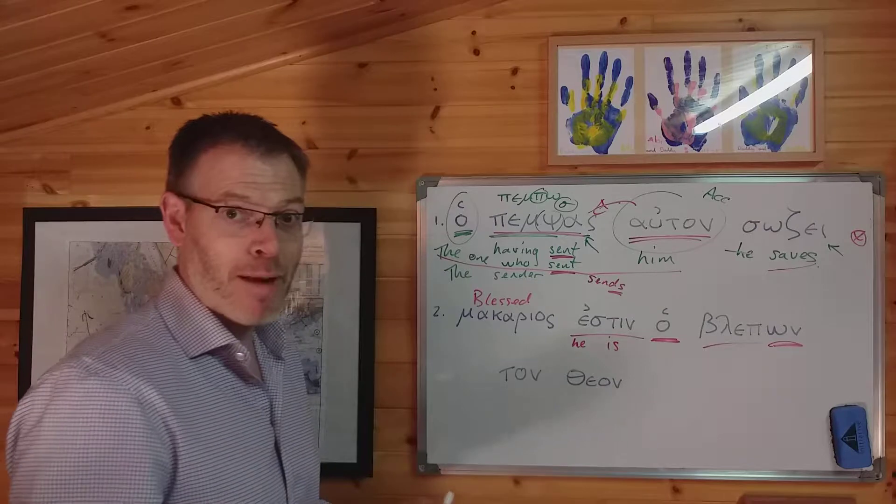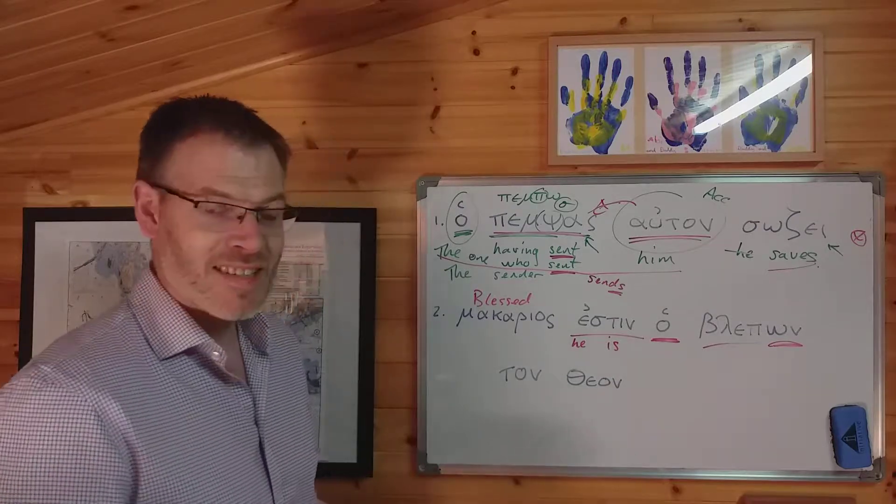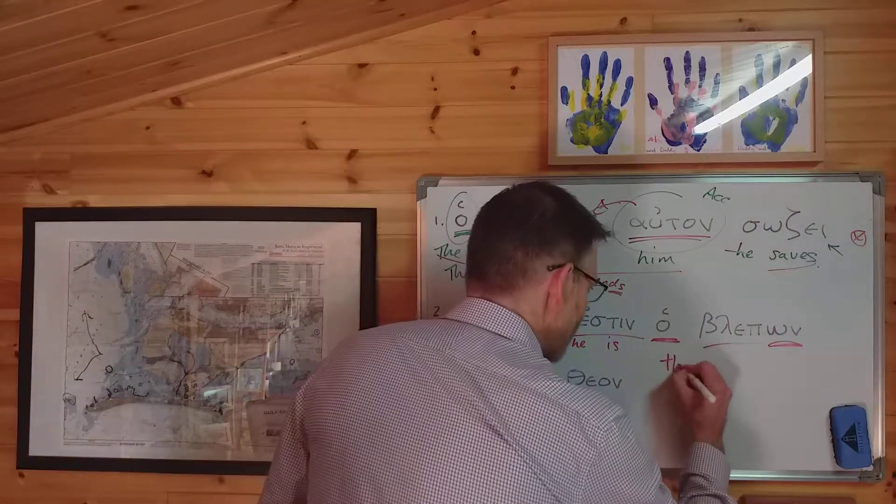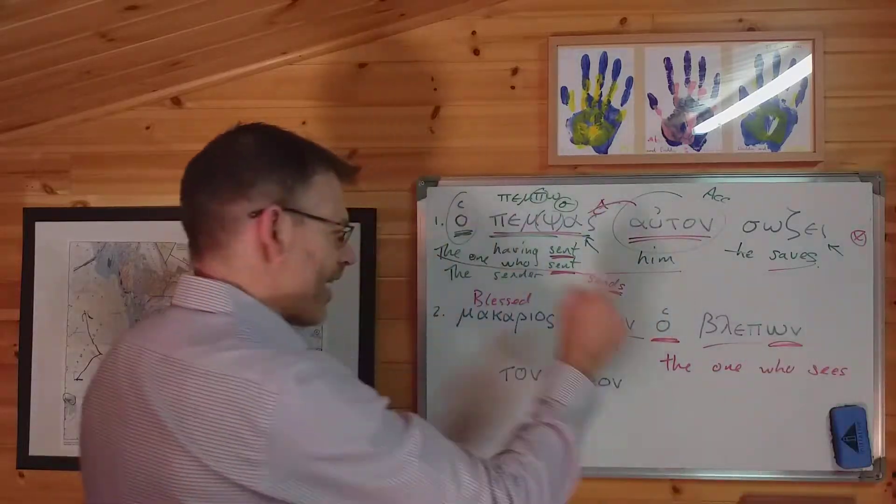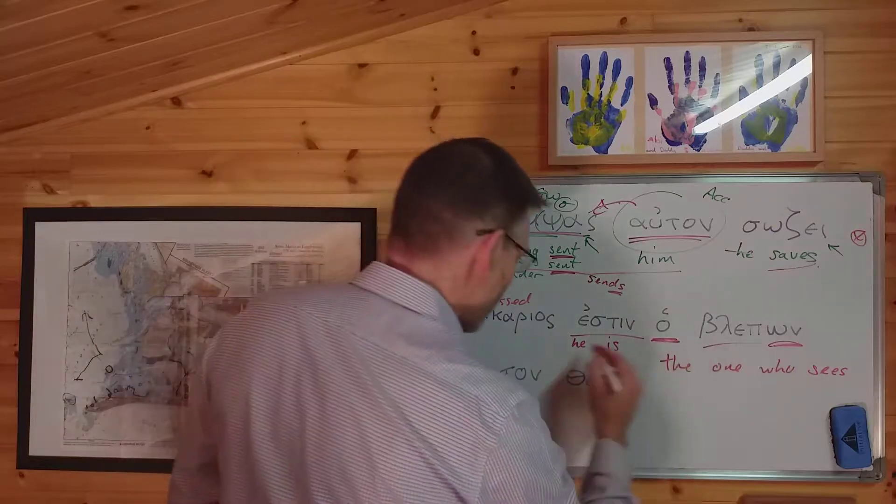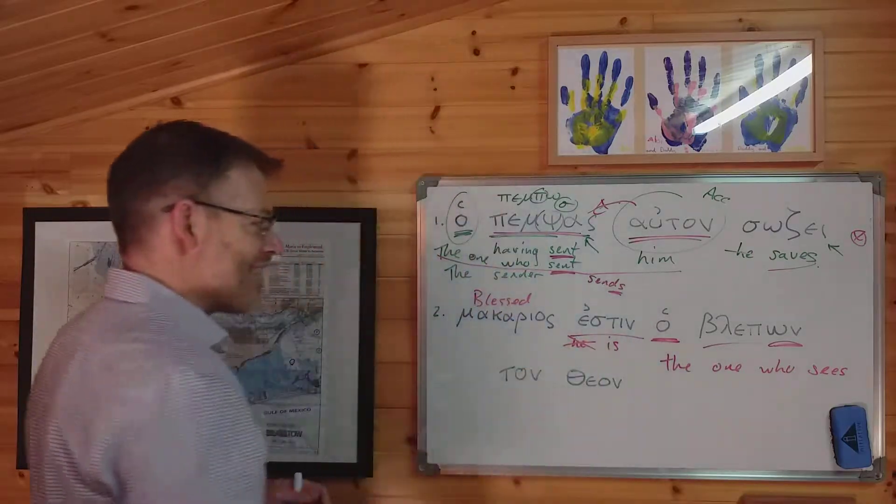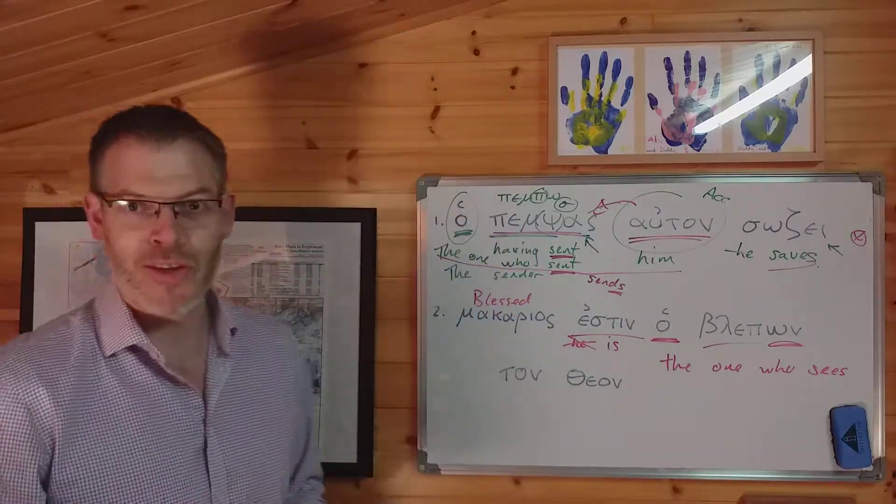Blepon comes from the verb blepo, meaning I see. So this is the one who sees. That's the subject. So the one who sees is, and now what else have we got in the sentence? Well, you've got ton theon, and you've got makarios.